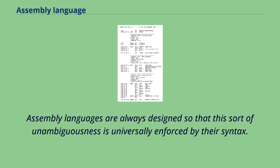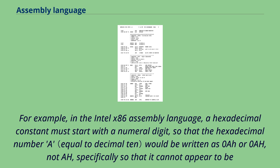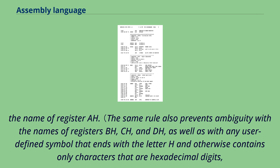Assembly languages are always designed so that this sort of unambiguousness is universally enforced by their syntax. For example, in the Intel x86 assembly language, a hexadecimal constant must start with a numeral digit, so that the hexadecimal number A would be written as 0A, not A, specifically so that it cannot appear to be the name of register A. The same rule also prevents ambiguity with the names of registers BH, CH, and DH, as well as with any user-defined symbol that ends with the letter H and otherwise contains only hexadecimal digits, such as the word BEACH.